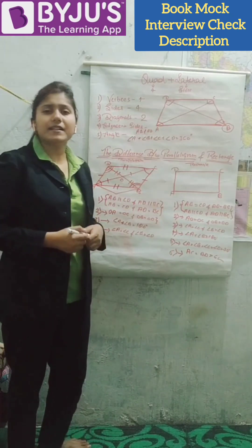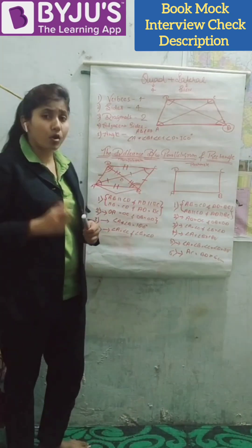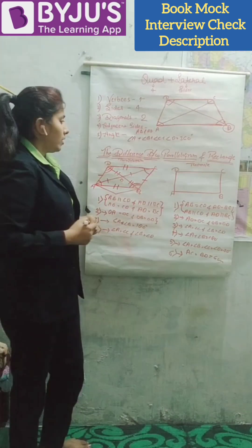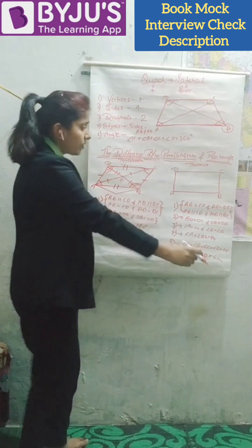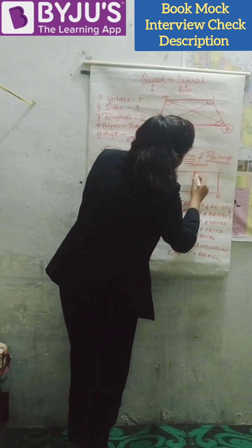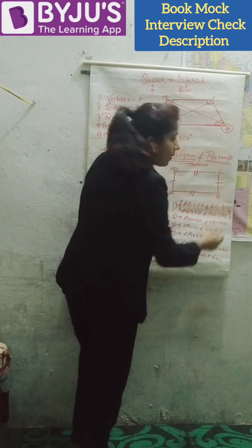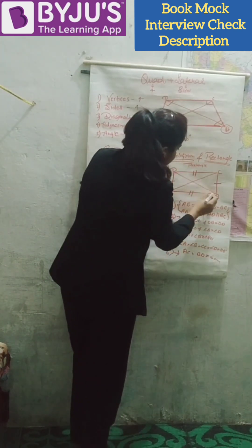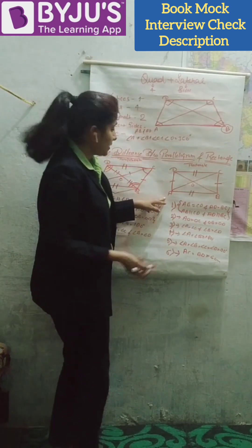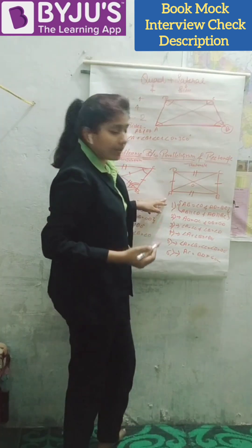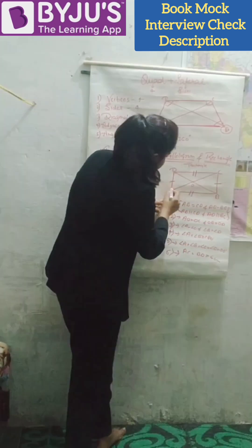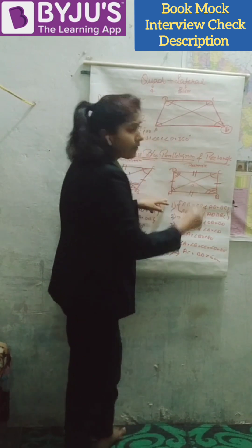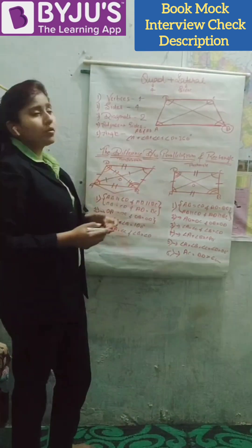These are the properties of parallelograms. A rectangle is a type of parallelogram because all properties of a parallelogram are inherited by a rectangle. First property: opposite sides are equal and parallel. Second: diagonals bisect each other. Third: adjacent angles are supplementary. Fourth: opposite angles are equal.